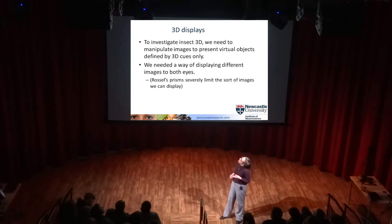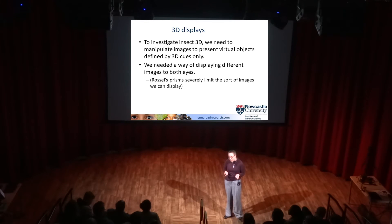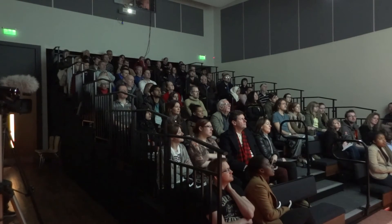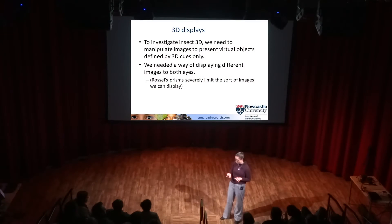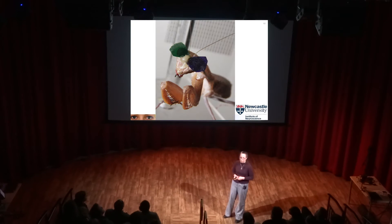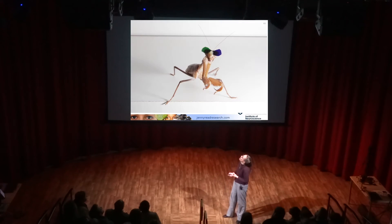The first problem was: how are we going to display 3D images to an insect? People sometimes ask why you need to display images in 3D - isn't it seeing in 3D all the time? Yes, but we need to be able to manipulate that, to make it make mistakes - just like Rossall did. If the animal just reaches out and catches a fly naturally, you don't know what it's responding to - air currents, or change in size as the fly approached. Rossall's prisms enabled him to show it could only be responding to 3D. We wanted to display more elaborate images, so we needed a better 3D display. That took a long time, and eventually my postdoc Vivek came up with a solution: 3D glasses for insects.